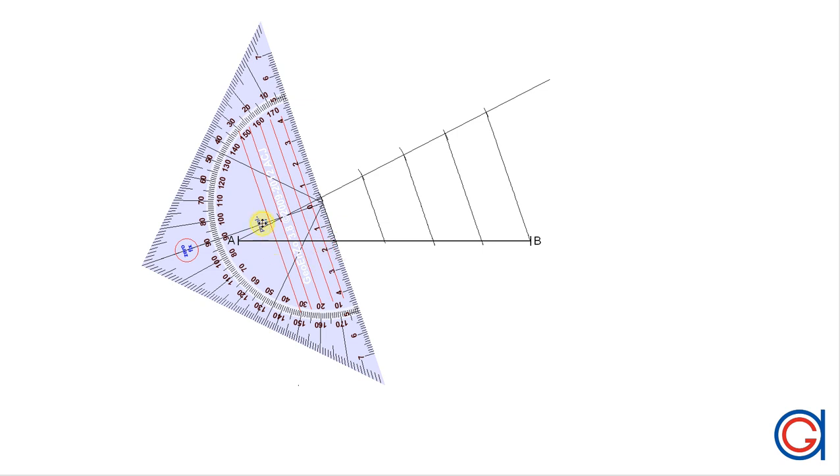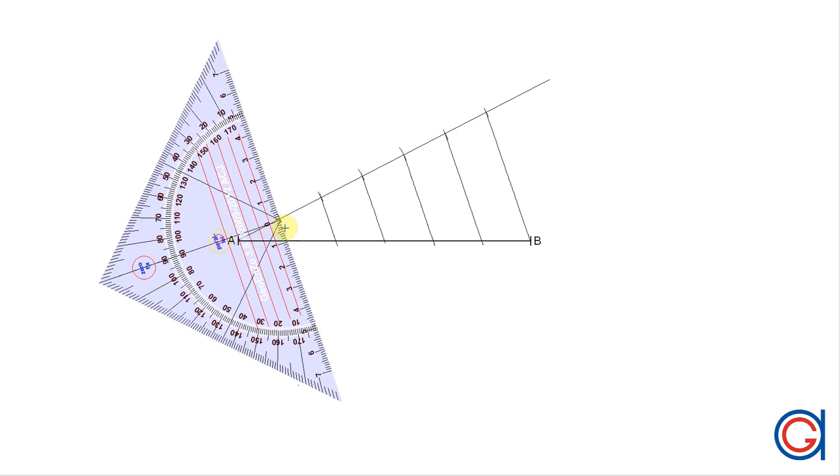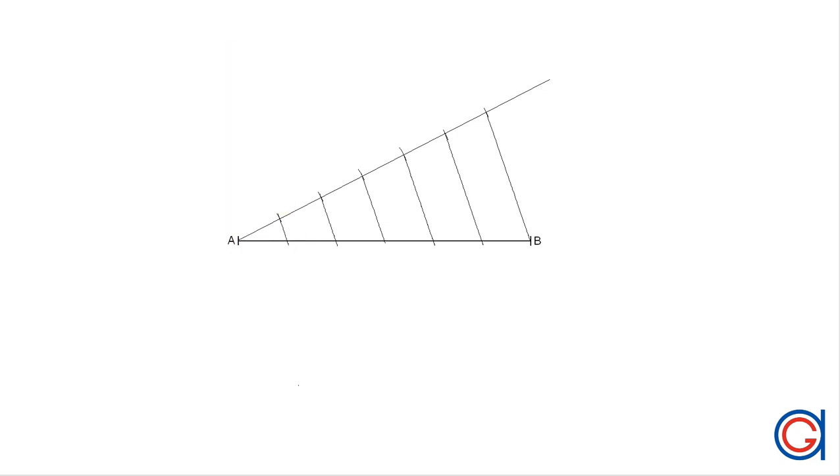Once we have divided the line segment AB into six equal divisions we number them from one to five.